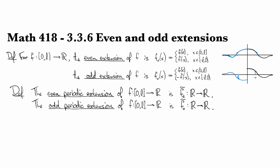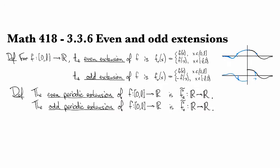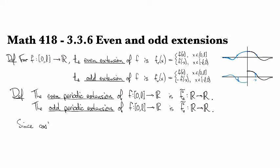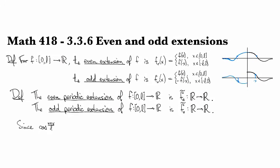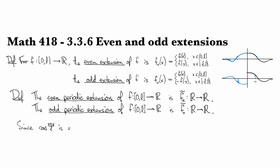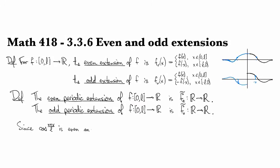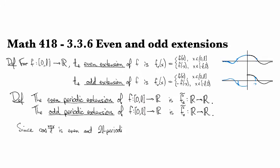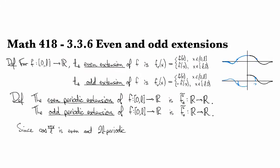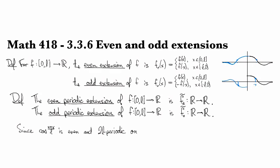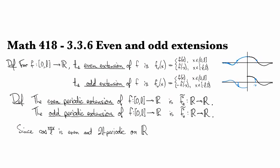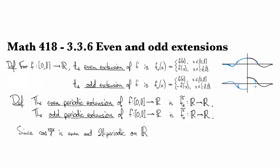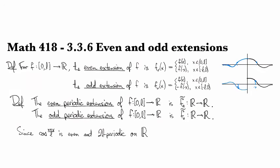Alright. So, what's going on here is that since the cosine functions that we're looking at, since this guy is even and 2L periodic, when you add them together, and I should say as a function defined on all of R, when you add all these things together, you're going to get something that's even and 2L periodic on all of R.